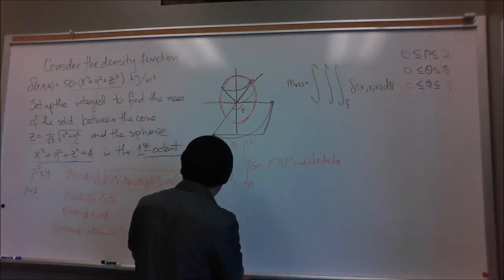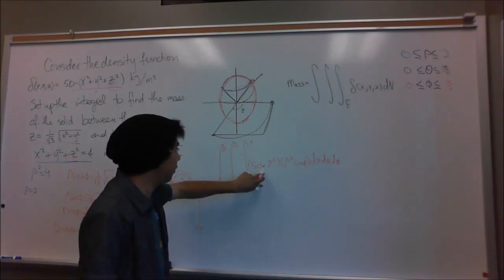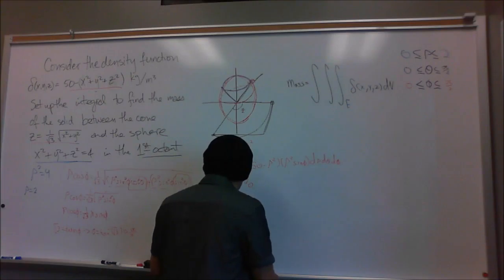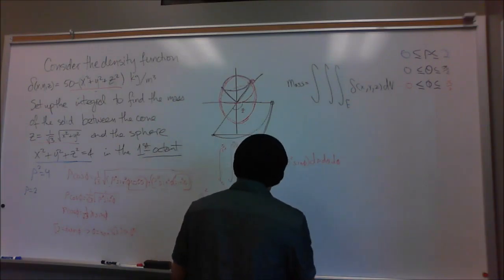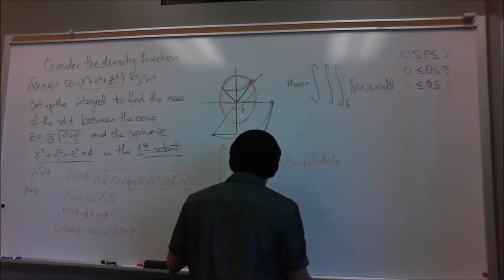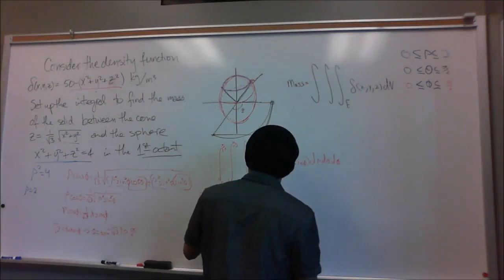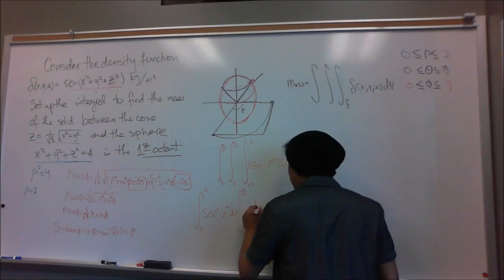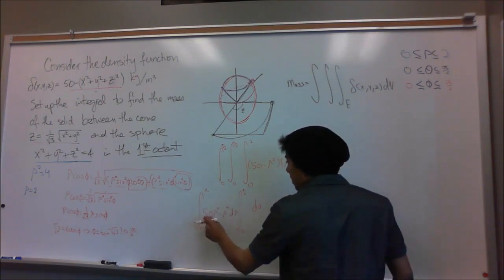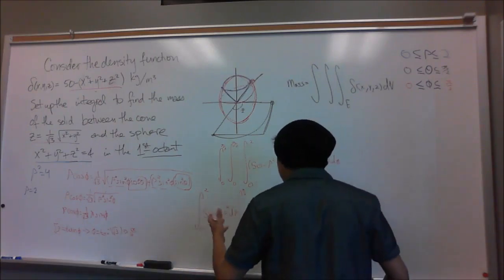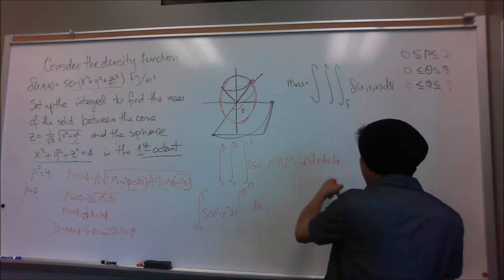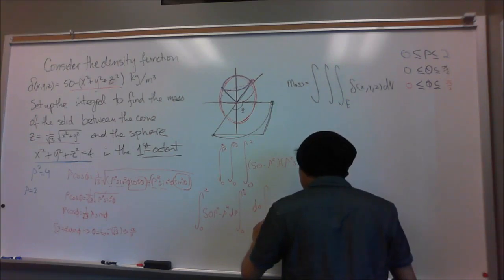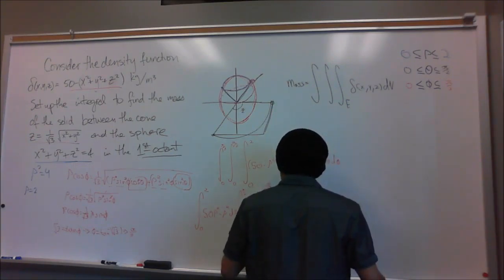Separating the integral: combining rho squared from the Jacobian with the density gives 50 rho squared minus rho to the fourth, integrated with respect to rho from 0 to 2. The theta integral from 0 to pi over 2 is just d-theta. The phi integral from 0 to pi over 3 is sine phi d-phi.